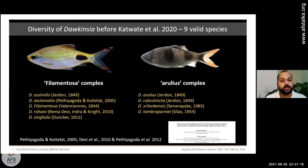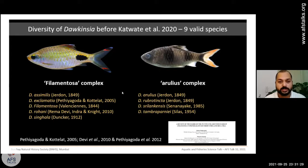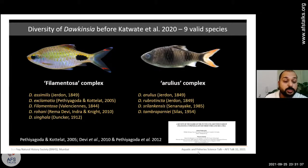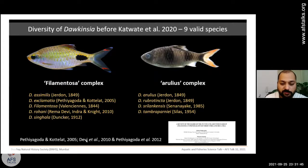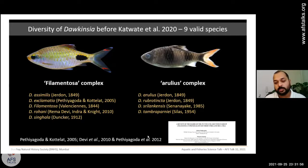Before my work, let me give a brief overview of the previous classification of Dawkinsia. The first revision of this group was carried out by Pethiyagoda and Kottelat in 2005 — a comprehensive revision of the filamentous group. After that came a description by Devi et al. of D. rohani, and then the revision of the entire Puntius group by Pethiyagoda et al. 2012.